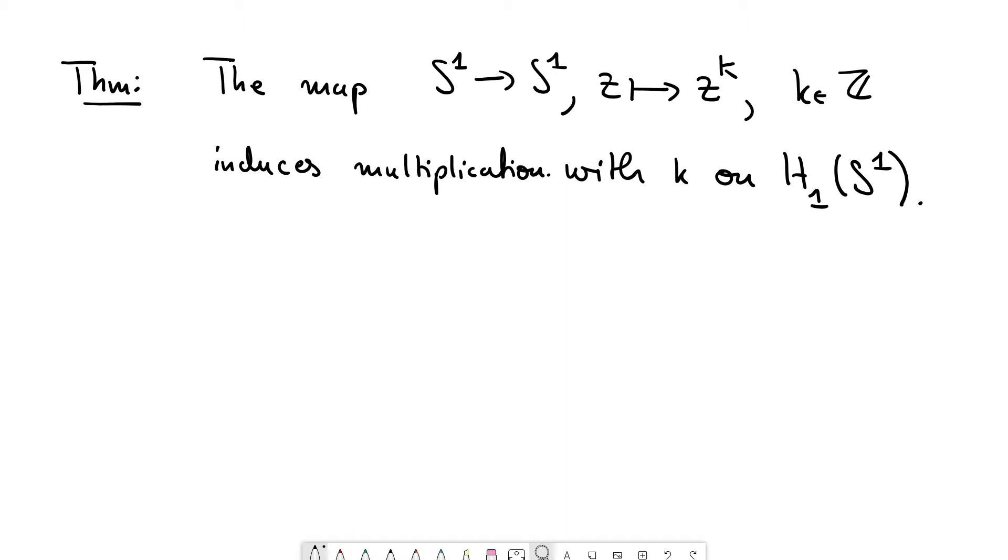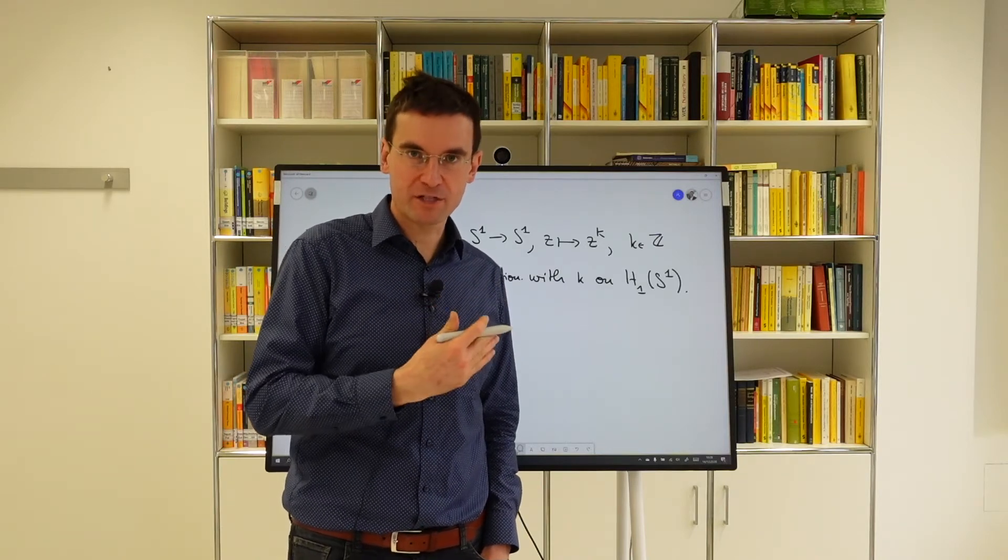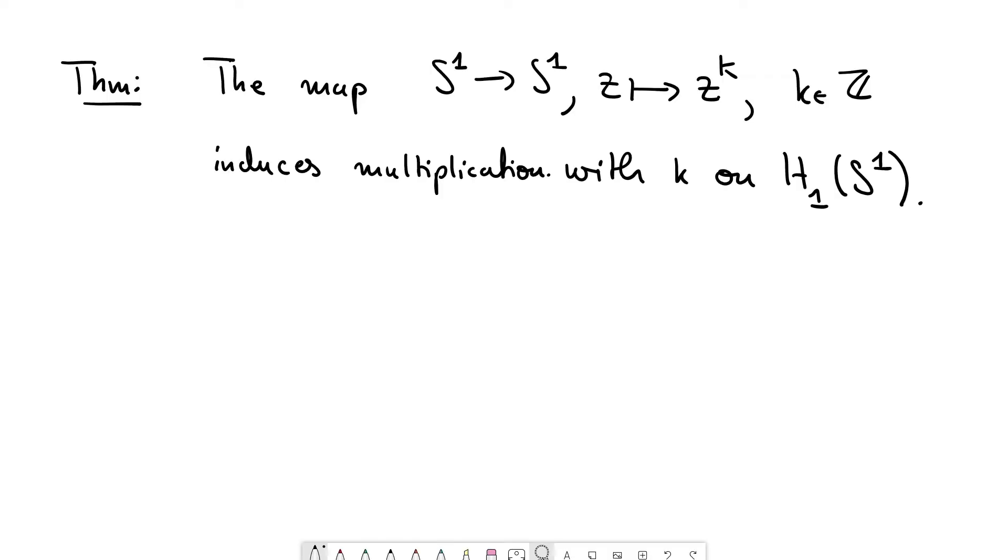So we will show this just by using the axioms of homology, but there is a different way to show that using the Hurewicz isomorphism. So this is just a remark, would be a very quick proof. We already know from covering theory that this map induces multiplication with k on π_1.